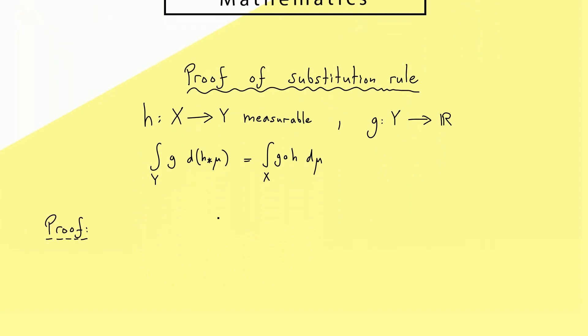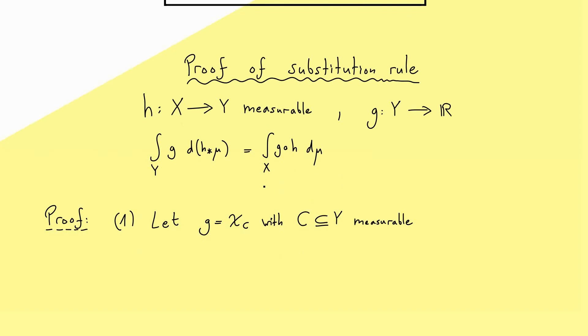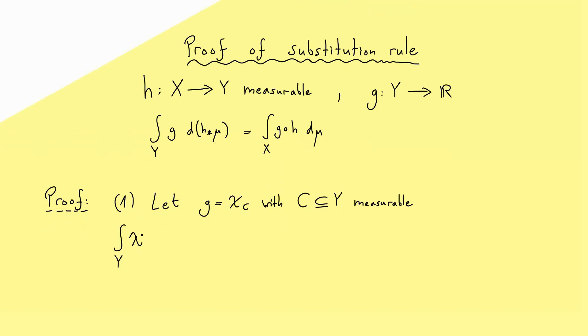Let's start with a simple case for such a function g, namely a characteristic function. Of course, our function g should be measurable, and therefore we take an element C from the sigma algebra. And now for this easy case, we can calculate both sides of our formula. On the left-hand side, we have the integration of χ_C over Y. However, the integration of a characteristic function is always the measure of the corresponding set.